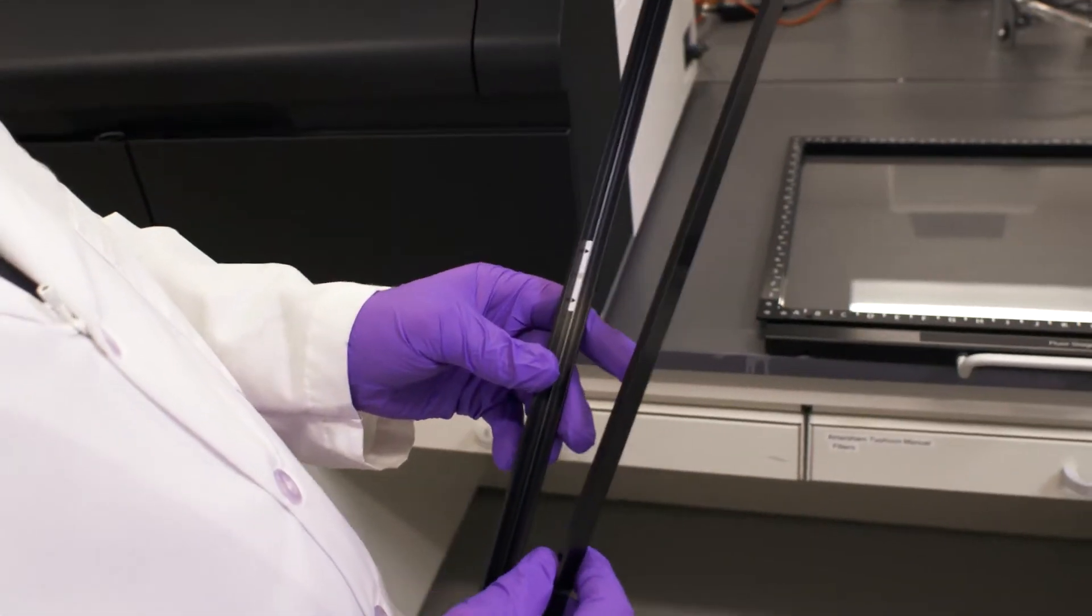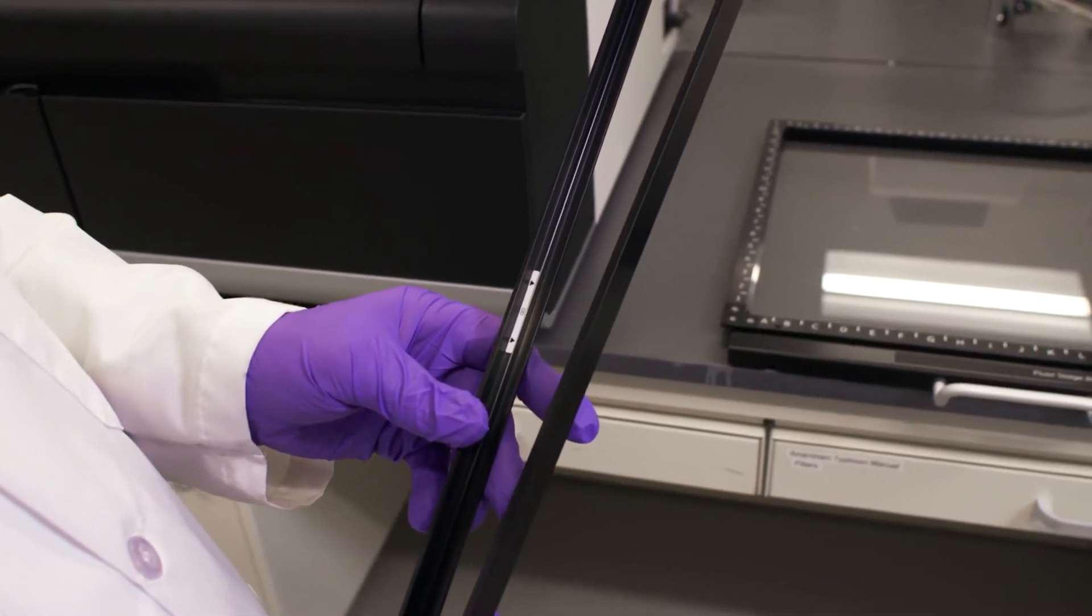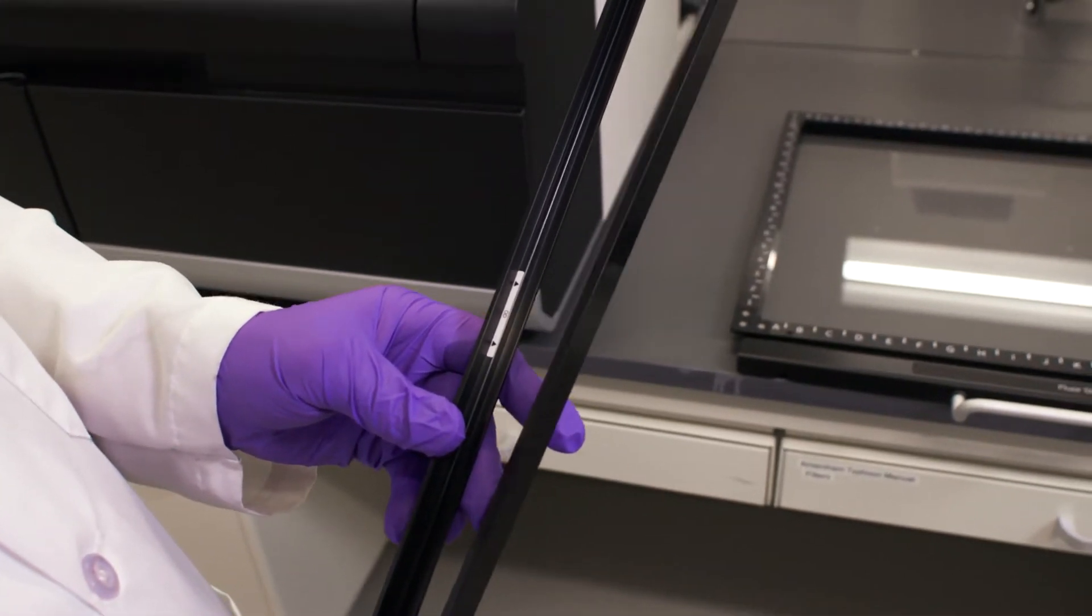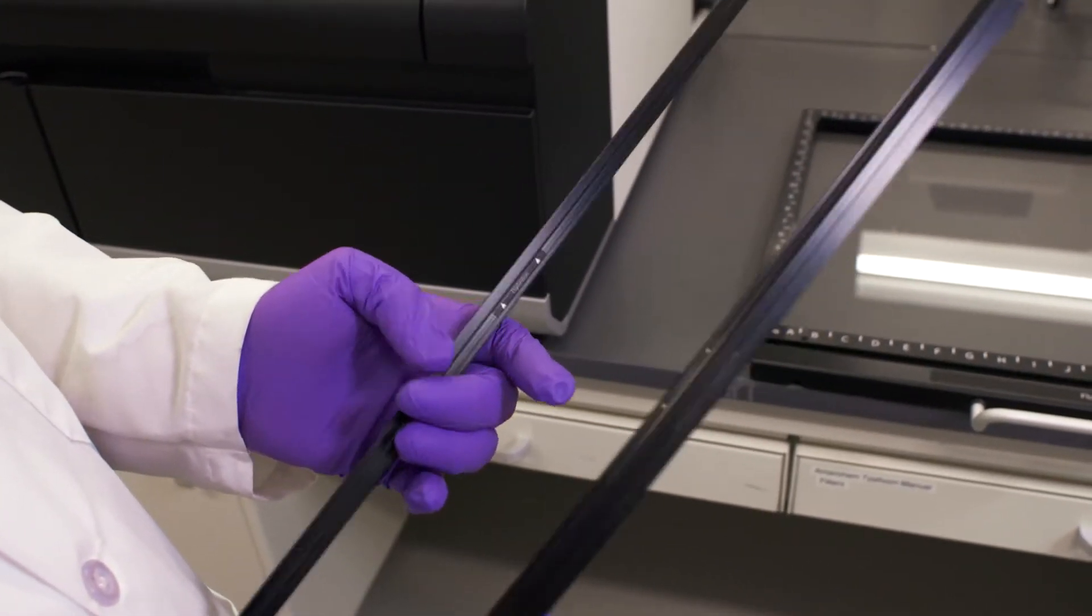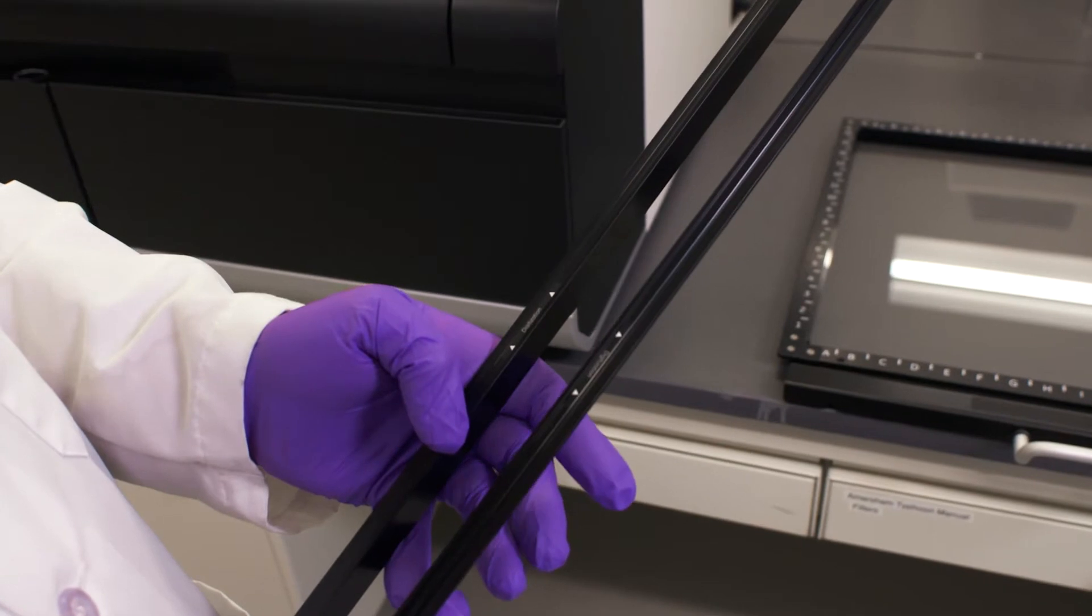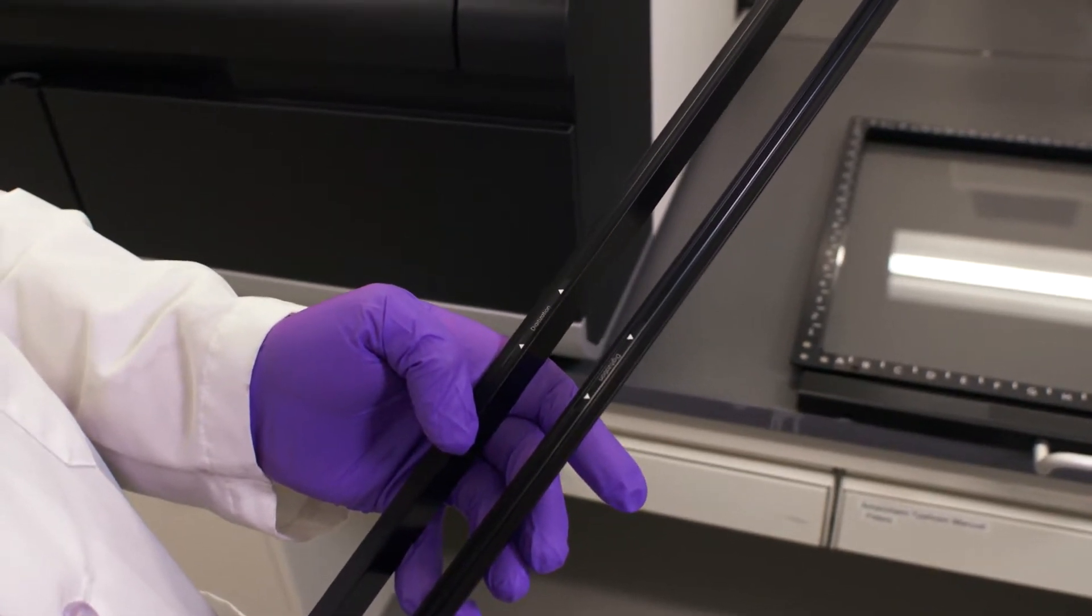We're going to need these two brackets here. In one orientation it says OD, so this is going to be for densitometry because that will measure in optical density. The other way around is for digitization, so this is really just for gel documentation.